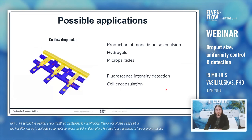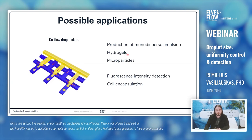One possible application of the system is co-flow droplet makers. If you want to automatize and produce large amounts of droplets, you need to parallelize. In co-flow droplet makers all channels influence each other, so if one channel is clogged, the droplet size in other channels changes. With automatic regulation, the system will always compensate for a clogged channel and you can still produce monodispersed emulsions. You can also use this to produce hydrogel for cell encapsulation.